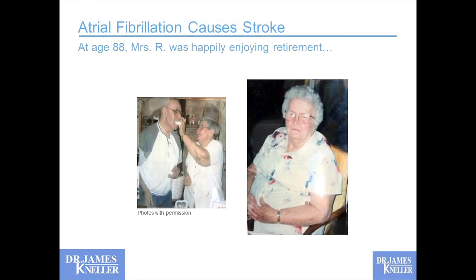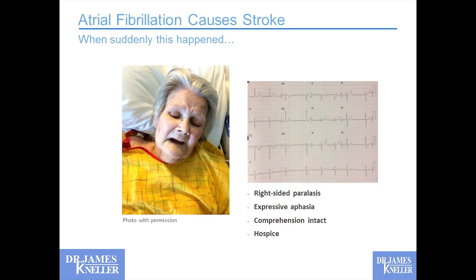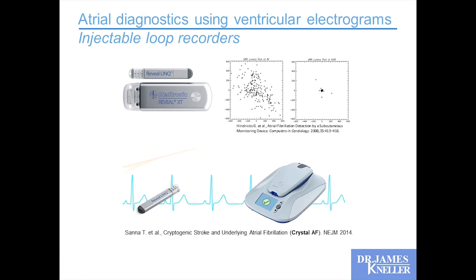Anyone who does TEE and sees a big clot in the left atrium realizes how catastrophic it can be. One of my patients from last March — age 88, doing very well, happily retired, sitting on her back porch swing enjoying the evening — suddenly suffered a devastating stroke. Now she has complete right-sided paralysis and expressive aphasia — she understands everything but can't communicate — and she's bound for hospice care. Her ECG showed atrial fibrillation with very slow ventricular response. First diagnosis. The clinical event that triggered it was stroke, and for her, the implications are devastating.